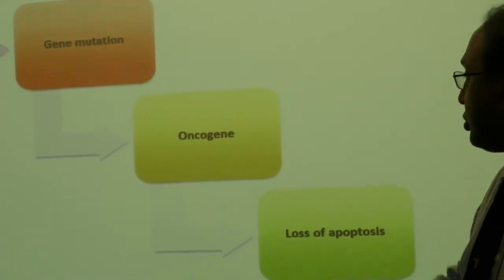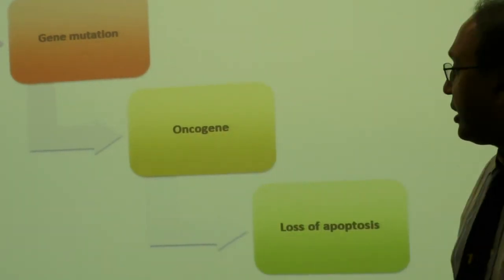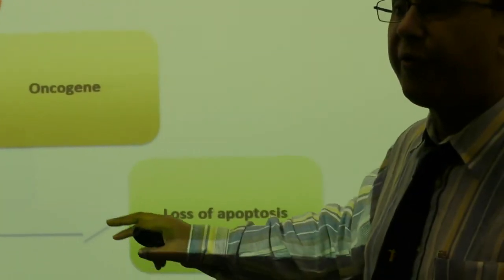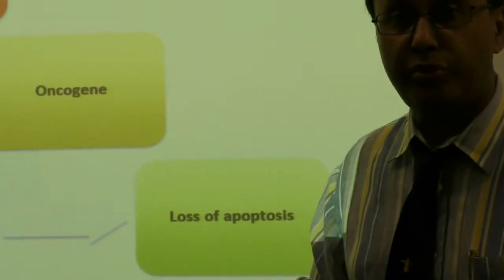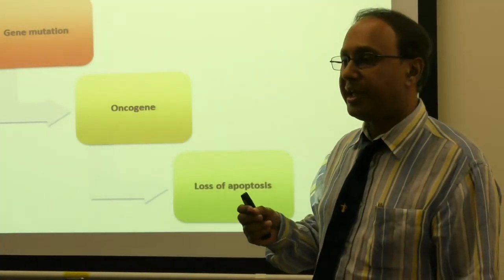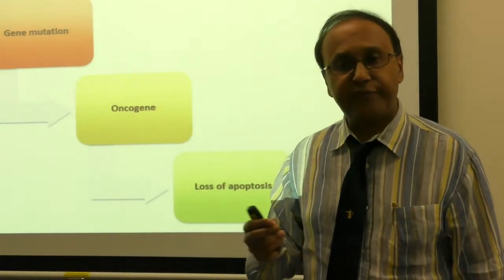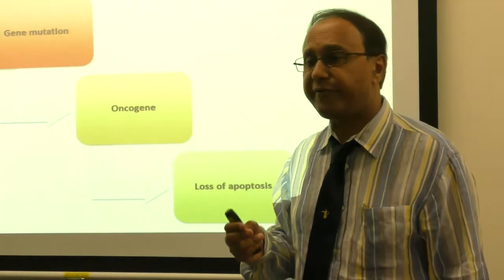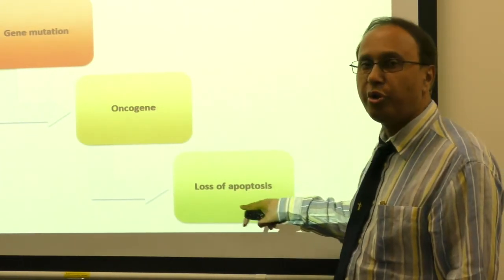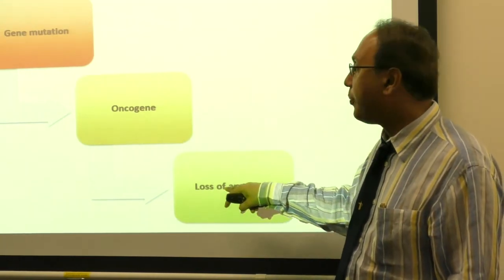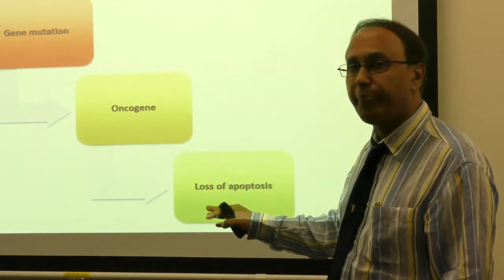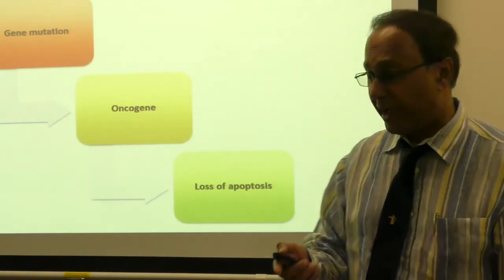Another issue that can happen at an oncogene is that it produces a protein that prevents the cancer cell from dying — so it becomes immortal. When a cancer becomes immortal, that means it has lost its ability to self-destruct. That ability to self-destruct is called apoptosis. When you lose your ability to self-destruct, you become immortal and grow endlessly. Cancer cells have an ability to stop this mechanism of apoptosis.